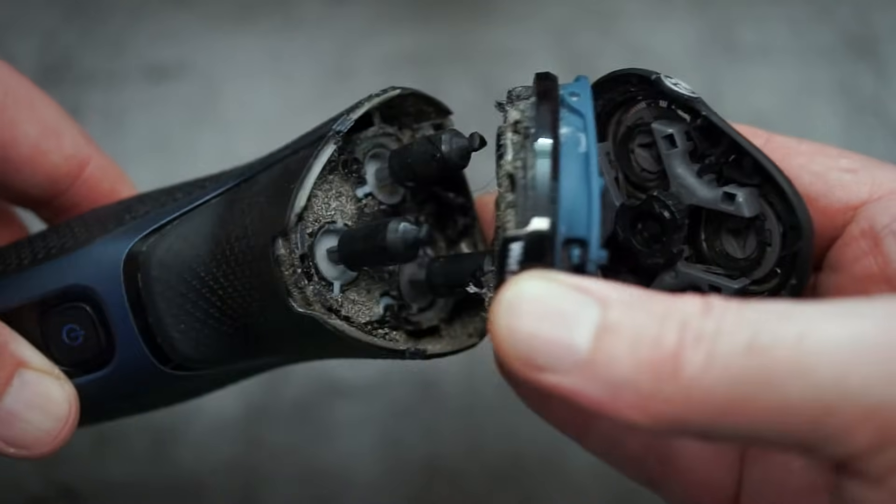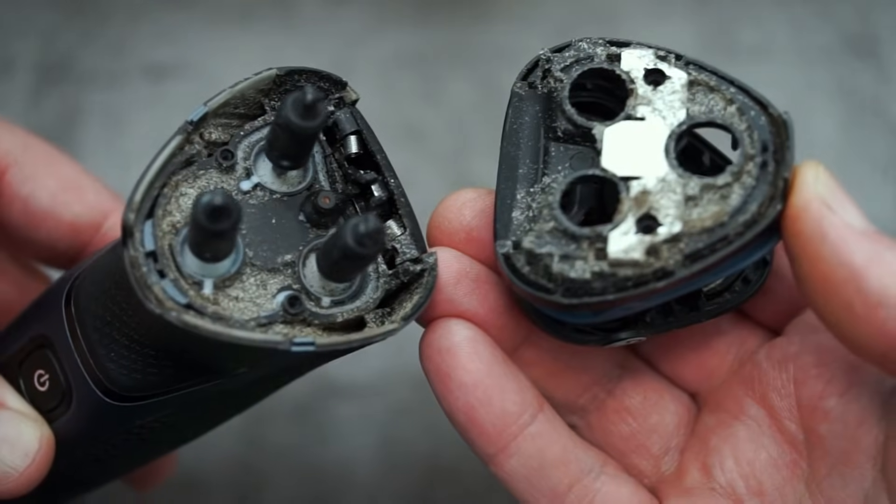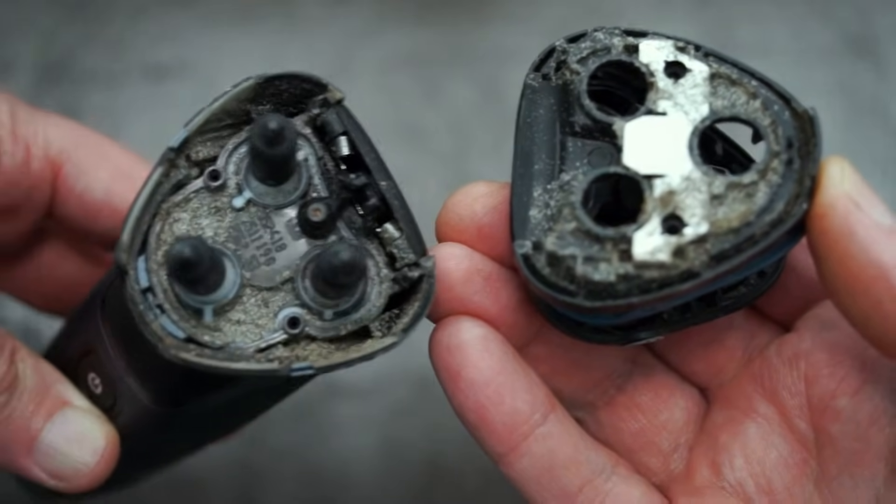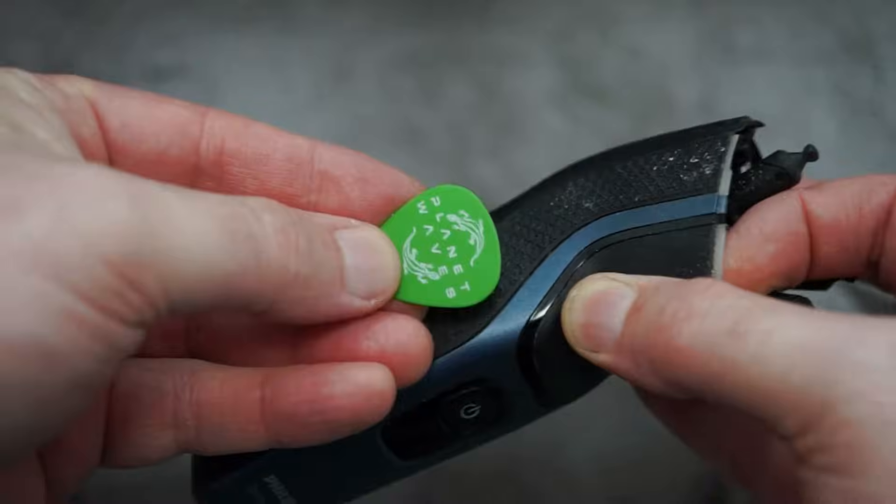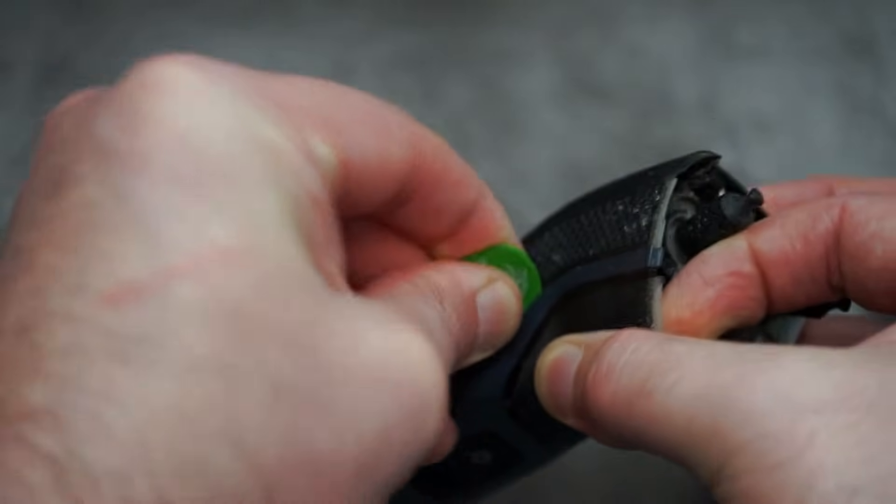Once you've got that out, pull the head off. You can see there is a lot of dirt and debris that's built up over the last couple of years on this shaver. I'm using a plectrum, just something that's hard plastic to help prise the case open.